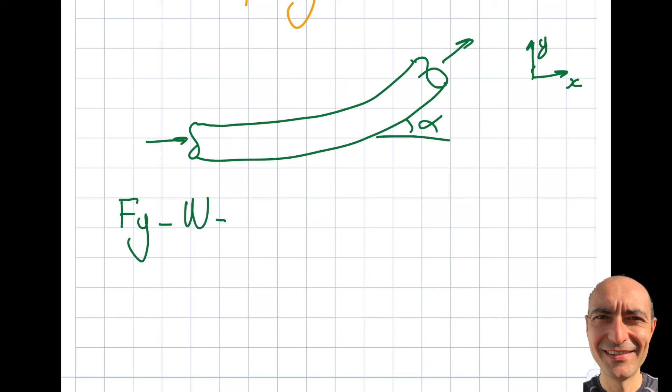On the second screen in the real exam, here's what it reads. I'm just copy-pasting what I see: Fy minus W minus p2A2 sin(α) equals ρQv2 sin(α).